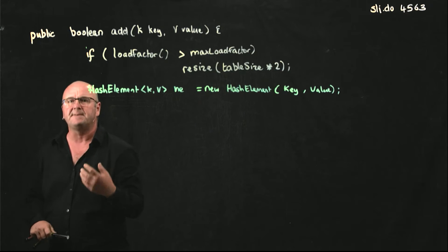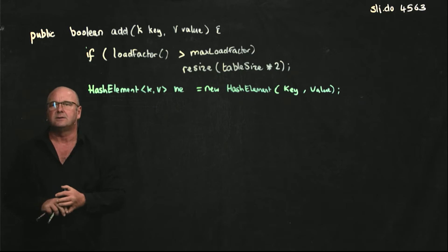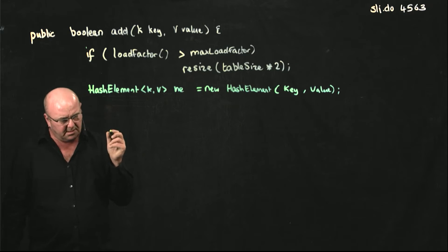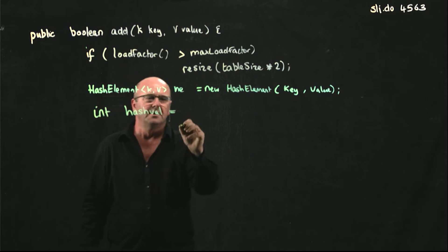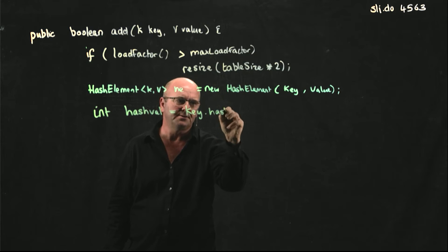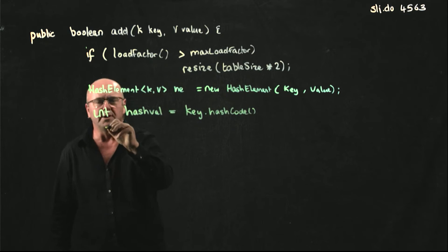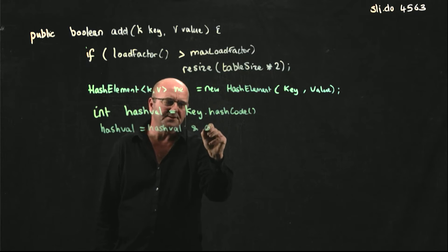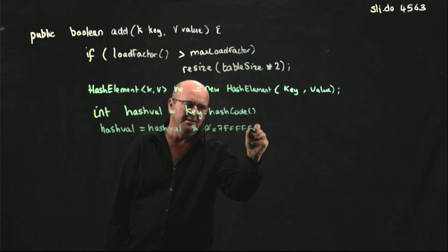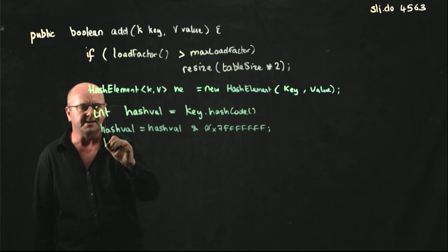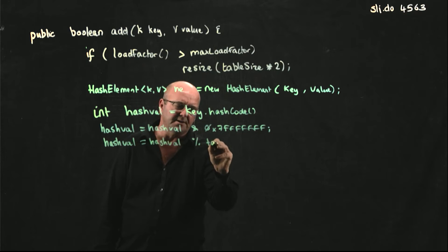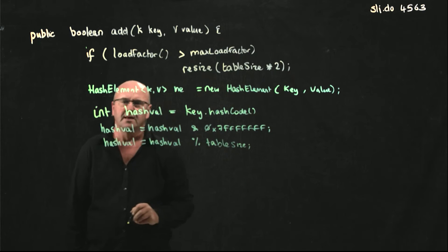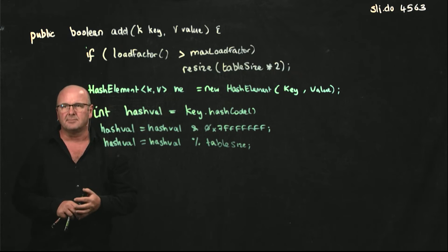So we've got our thing that we're going to add to our array. And so the next step, of course, is to find the position in the array where we're going to add this particular object. So we go through our steps that we've talked about. We get our hash value, and that's going to be key.hashcode. We take hash value, and we make it positive. We take our hash value, and we mod it on the table size.